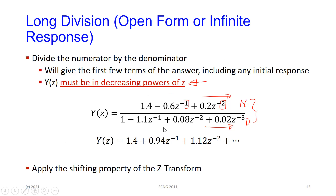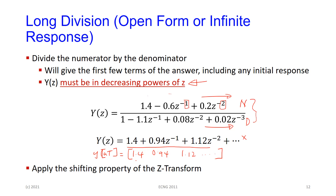You divide the numerator by the denominator — long division — and you have to have it in this form. Once you get the first few terms — in this case the first three terms — if Y(Z) equals that, then by inspection you have the inverse transform. This is Y(0) because this is Z to the power zero, this is Y(1) because this is Z to the minus one, and Z to the minus two would be Y(2).